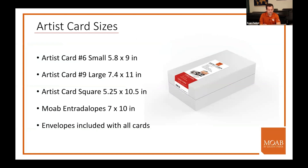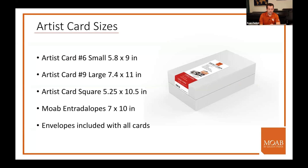The Moab artist cards come in four sizes: the small, large, and square artist cards, plus the Entrada Lopes which are 7x10 and have been around a long time. The main difference between the number nine large and the Entrada Lopes is that newer printers like the Canon Pro 200 or Pro 300 can print borderless on the 7x10 template natively from the print driver. Borderless printing is limited by the print driver — it either works or it doesn't.